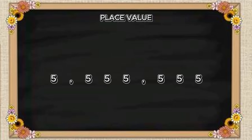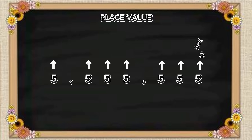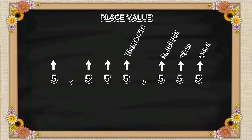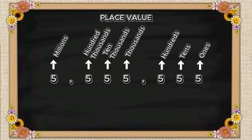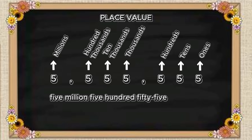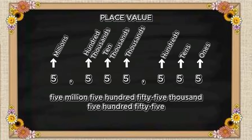Join me and let's learn the place value of the following numbers. Let's start with ones, tens, hundreds, thousands, ten-thousands, hundred-thousands, and millions. This number reads as 5,555,555.